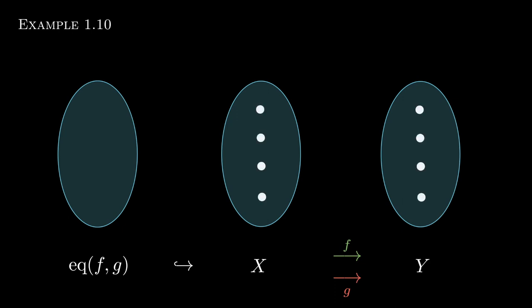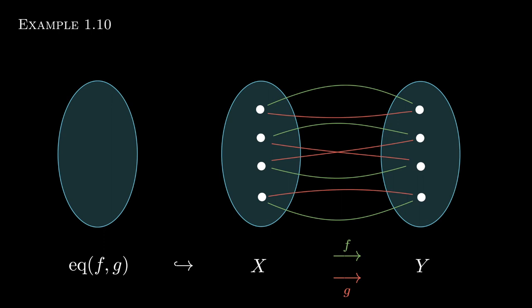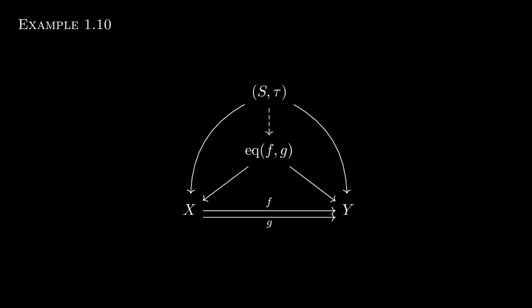Now let's look at another important example of a limit in Top: the equalizer. If we have two functions f and g from X to Y, we want to consider what part of X has the same image under both f and g. The elements of X on which f and g agree form the equalizer in Set. Thinking of it as a limit, we simply equip it with the initial topology, so the equalizer in Top is those elements of X equipped with the subspace topology.